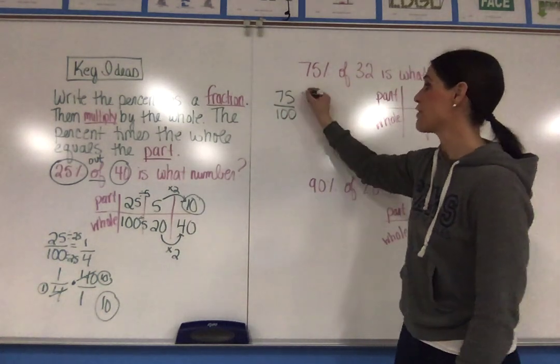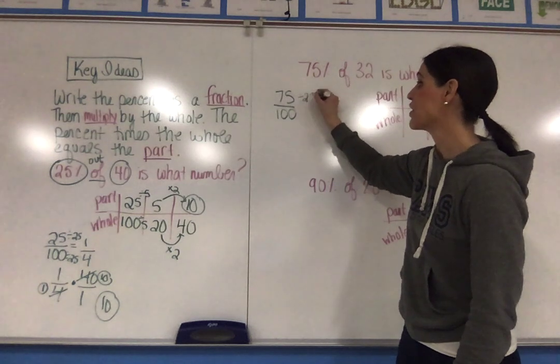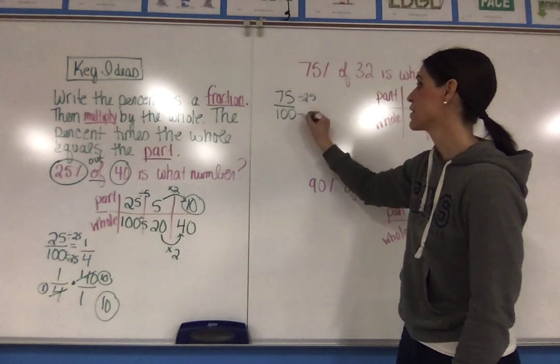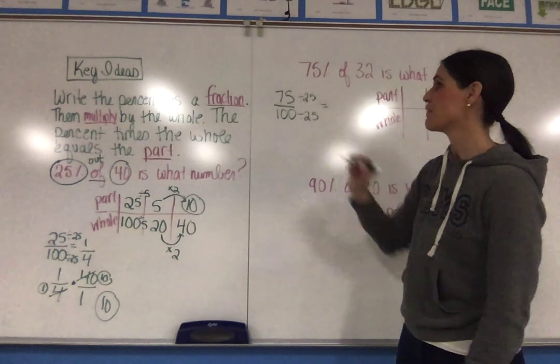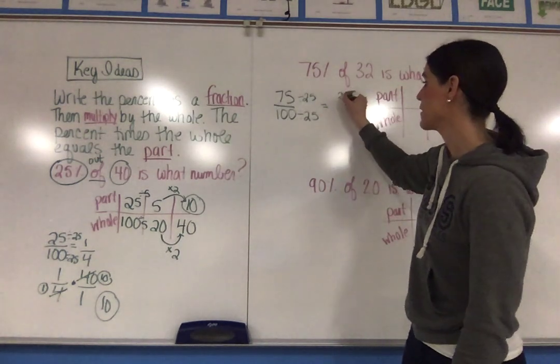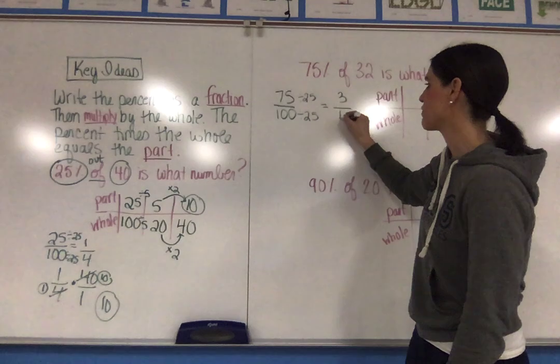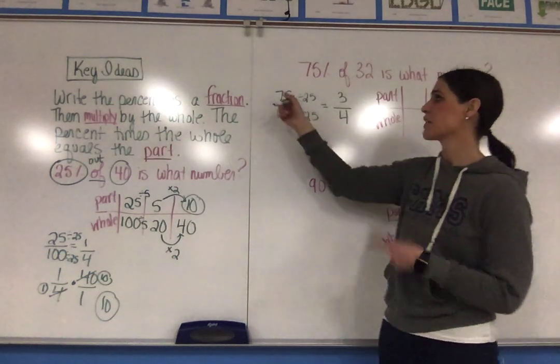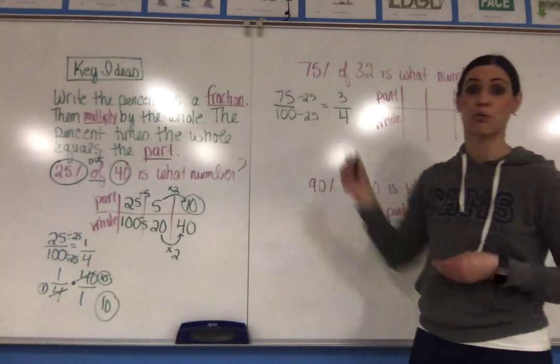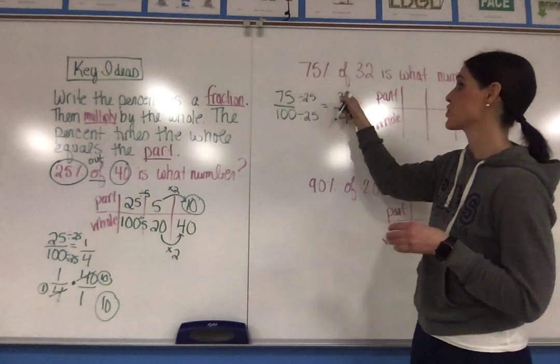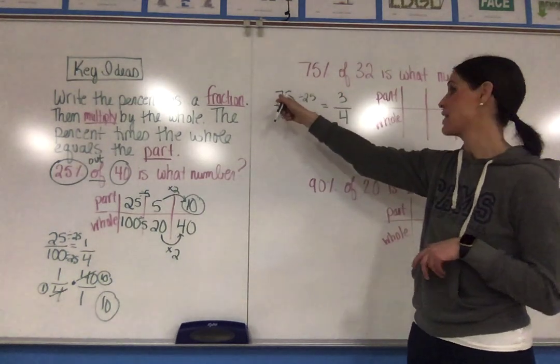The greatest common factor for 75 and 100 is 25. So then I'm going to simplify that. 75 divided by 25 is 3, and 100 divided by 25 is 4. You could think of this like 75 cents and 25 is a quarter. And so if you put three quarters together, that gives you 75 cents.